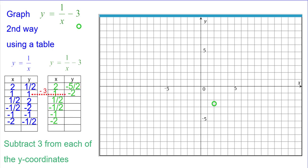1 minus 3 is negative 2, so plotting 1 comma negative 2. And 2 minus 3 is negative 1, plotting the point 1 half comma negative 1.